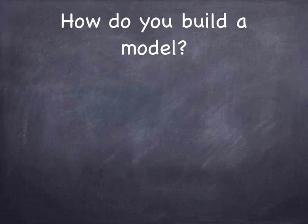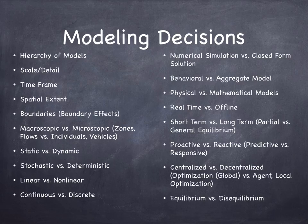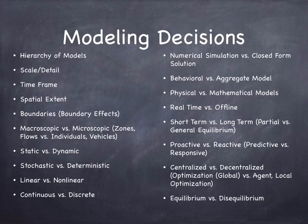How do you go about building a model? You have to make a number of modeling decisions about what the state of the model will be. Are you dealing with a hierarchy of models — that is, does model A feed into model B? What is the scale of the system that you're modeling? Are you modeling a region, a planet, a neighborhood, a street, a vehicle, or an individual person?